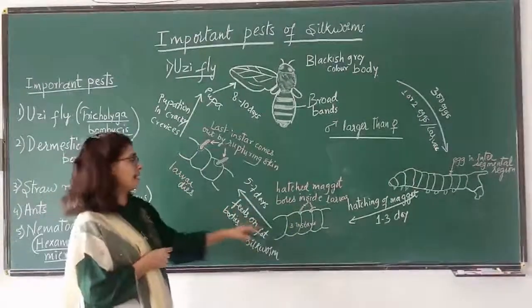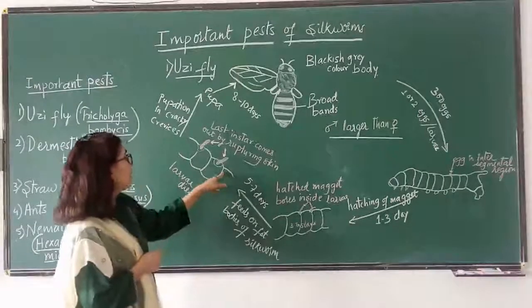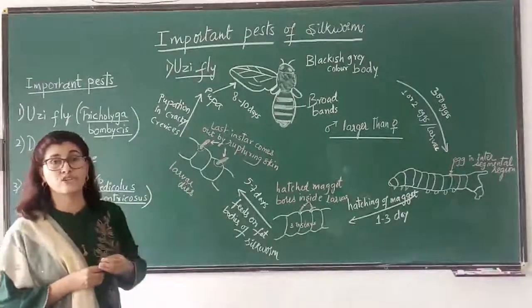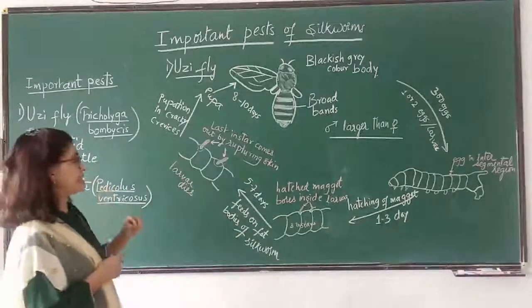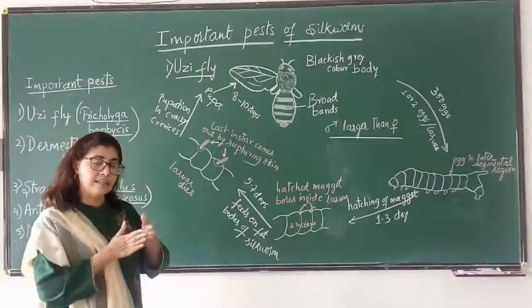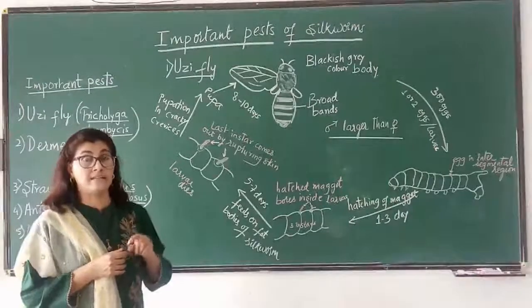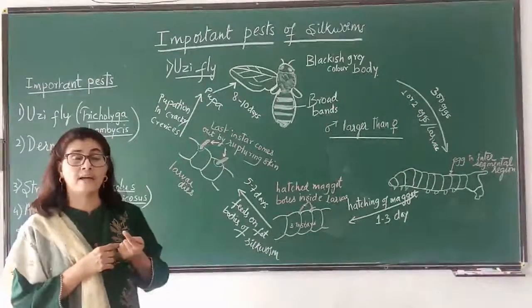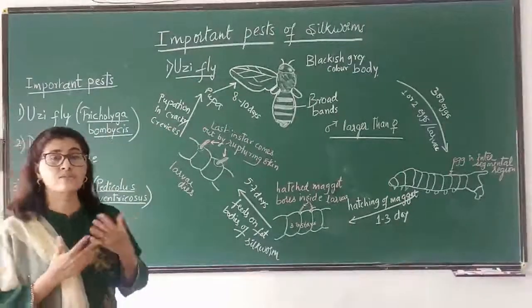Three instars grow inside the larval body. After five to seven days, the last instar maggot comes out by rupturing the larval skin, and the larva dies. If oozyfly lays eggs on the last instar — the fifth instar — silkworm larva during its final days, that larva can spin a flimsy cocoon. However, the maggots inside the body will transfer inside the pupa, cut open the pupa, and come out by piercing the cocoon. Such cocoons are also useless and have no market value.